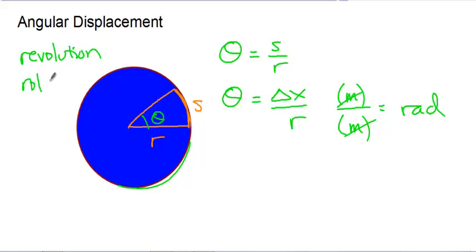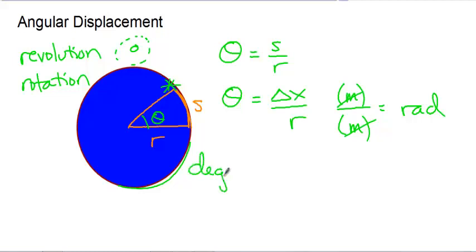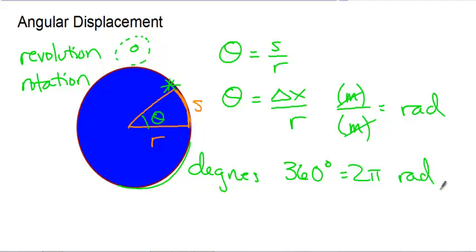You could also measure angular displacement in degrees. Remember that 360 degrees is equal to 2 pi radians, so keep that in mind if you ever have to deal with degrees. One time around — one revolution or one rotation — is equal to 360 degrees, which is equal to 2 pi radians.